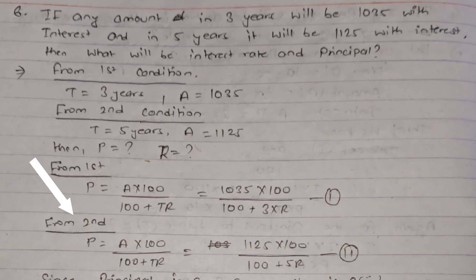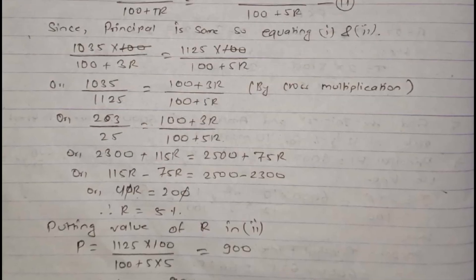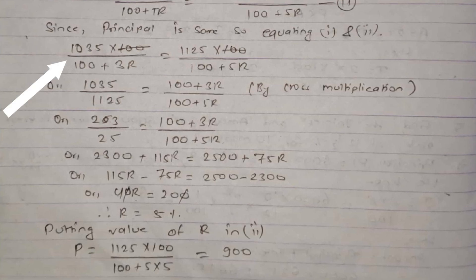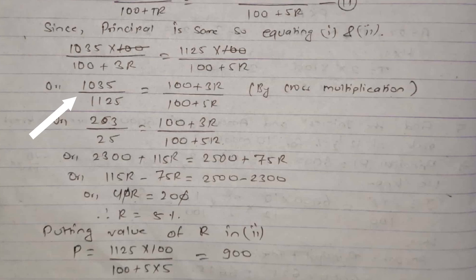From the second condition, using the same formula: P = 1125 × 100 / (100 + 5r) — this is equation 2. Since the principal amount is the same in both conditions, we equate equation 1 and equation 2: 1035 × 100 / (100 + 3r) = 1125 × 100 / (100 + 5r). Cancelling 100 from both sides and cross-multiplying: 1035 / 1125 = (100 + 3r) / (100 + 5r). Simplifying 1035/1125 gives 23/25, so 23/25 = (100 + 3r) / (100 + 5r).